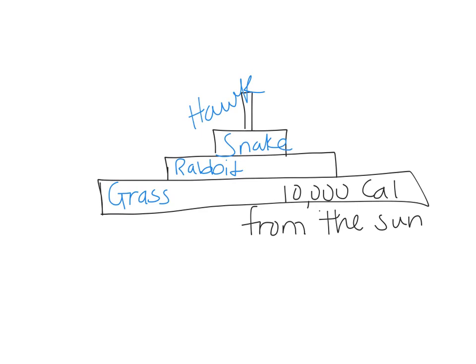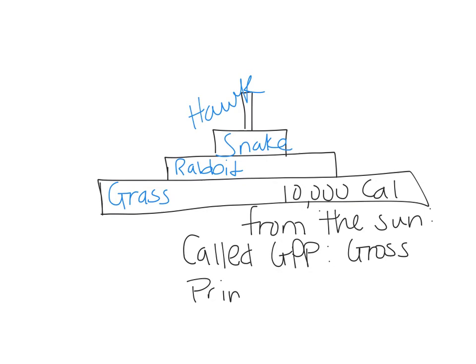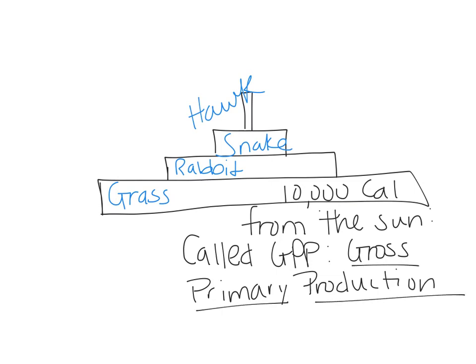Producers also do cellular respiration — they don't just do photosynthesis, they do both. This production of energy from photosynthesis by producers is called GPP, which stands for gross primary production. You will learn about this more in Chapter 5, the next chapter.